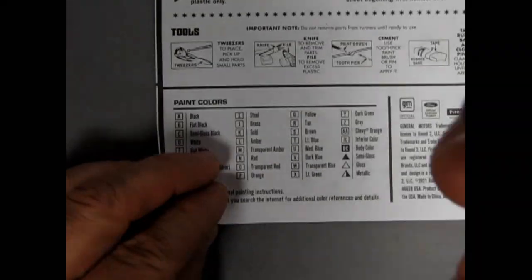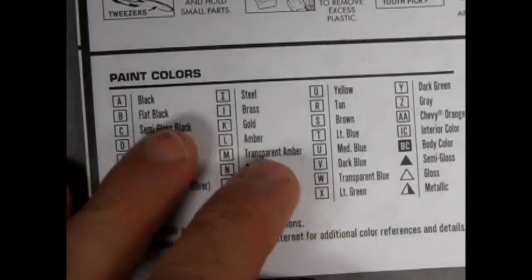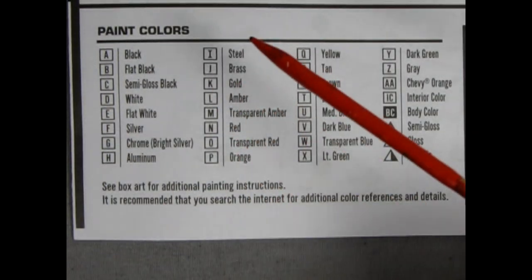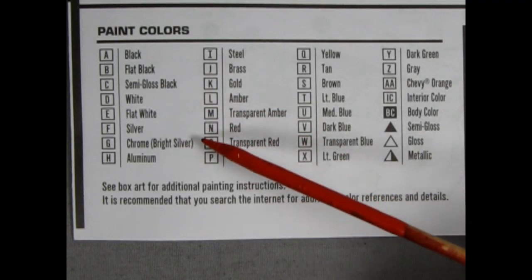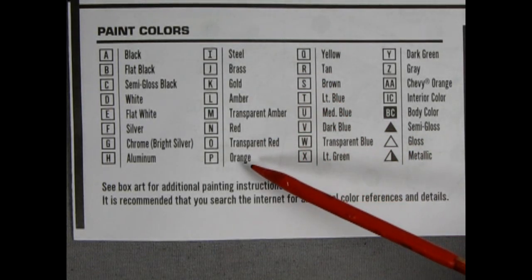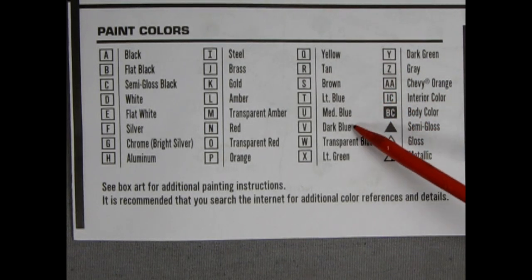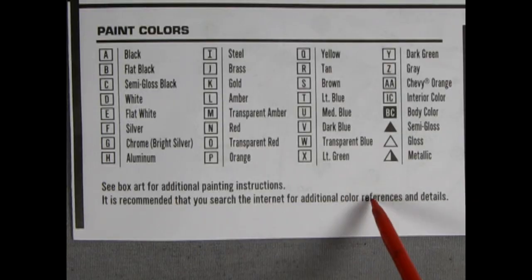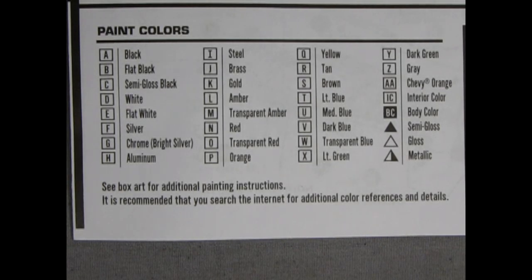Maybe what I'll do is there's a lot on here. Let's just zoom in the camera. Alright, so we've got paint colors. Black, flat black, semi-gloss black, white, flat white, silver, chrome, bright silver, aluminum, steel, brass, gold, amber, transparent amber, red, transparent red, orange, yellow, tan, brown, light blue, medium blue, dark blue, transparent blue, light green, dark green, gray, chevy orange, interior color, body color. And then the filled in triangle is semi-gloss. The open triangle is gloss and the half full half empty triangle is metallic.